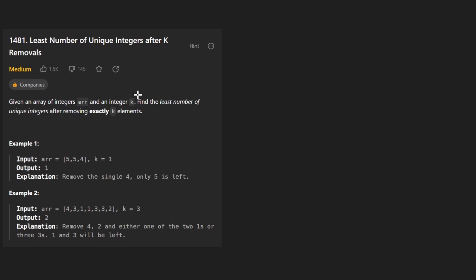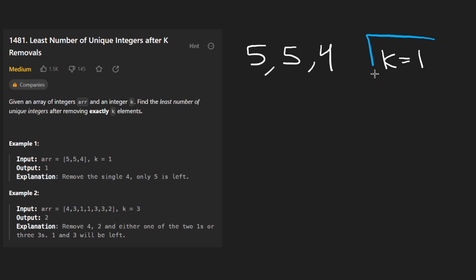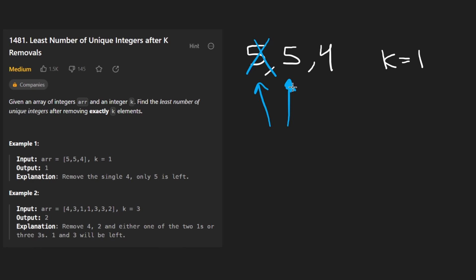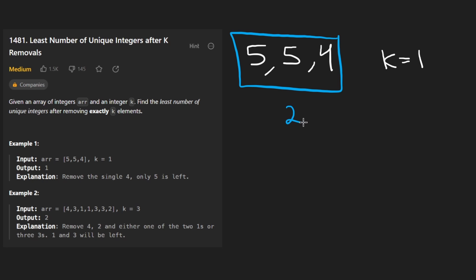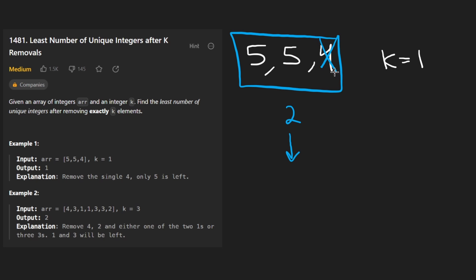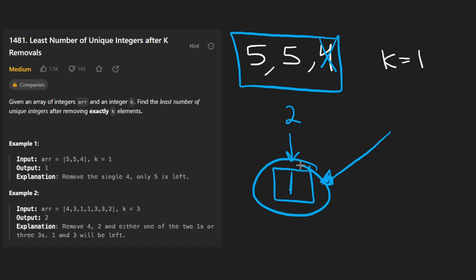We're given an integer array and a second parameter k, which is an integer. In this first example, k is one, meaning we can remove one element from the array. We could remove the four, or one of the fives — it doesn't matter which five. We have two distinct integers: five and four. If we remove a five, we still have two distinct integers. But if we remove the four, we only have one distinct integer remaining. We want to minimize the number of distinct integers and return that value.